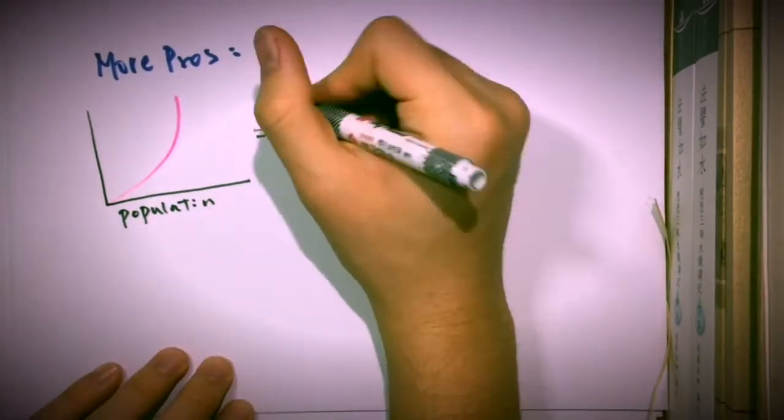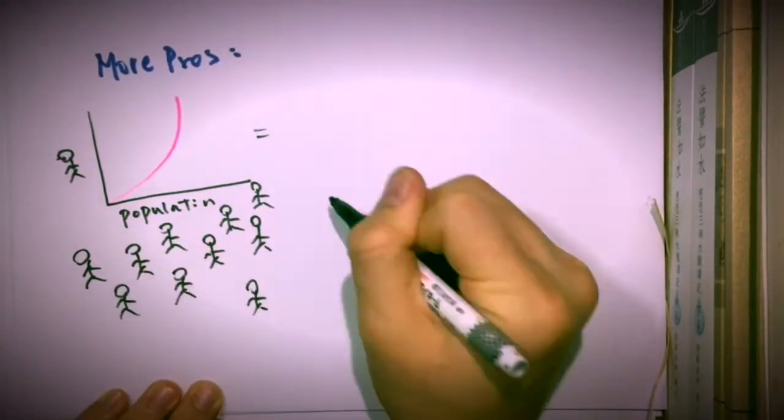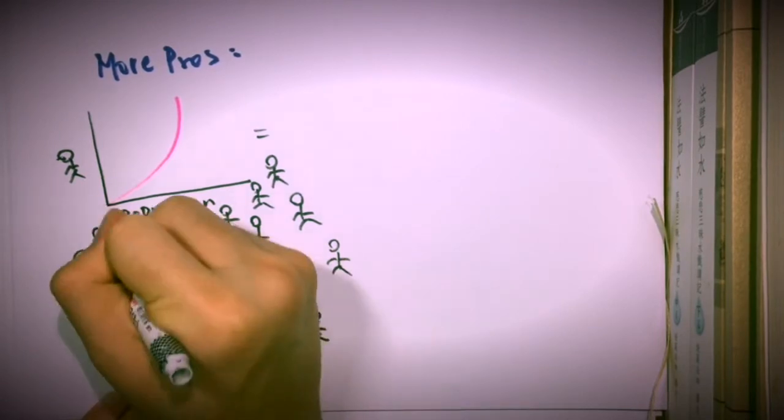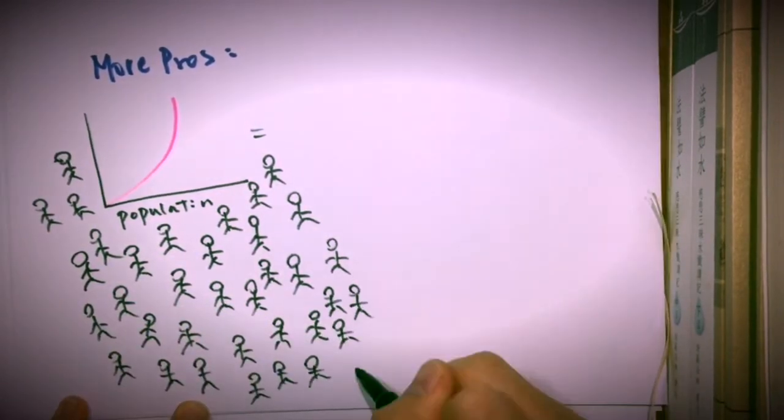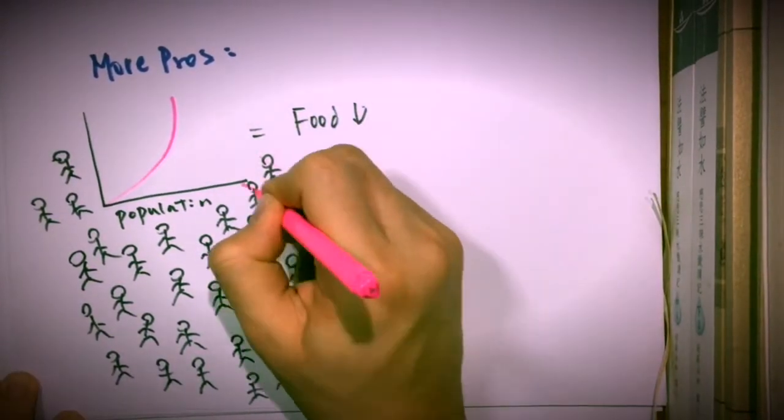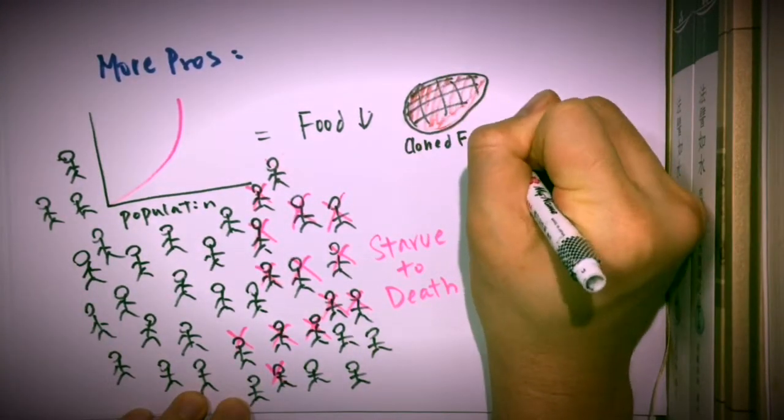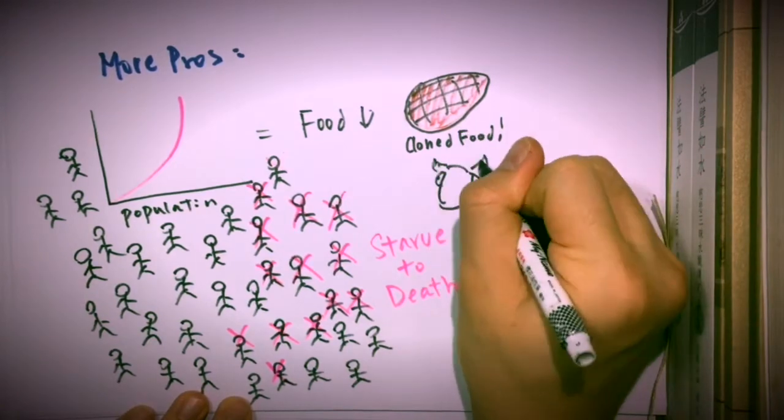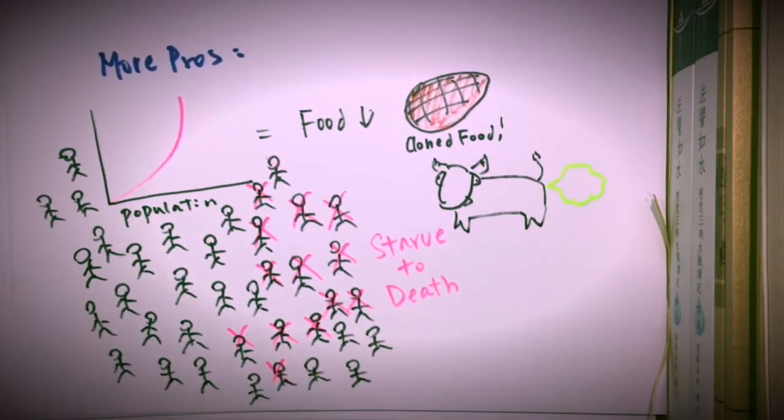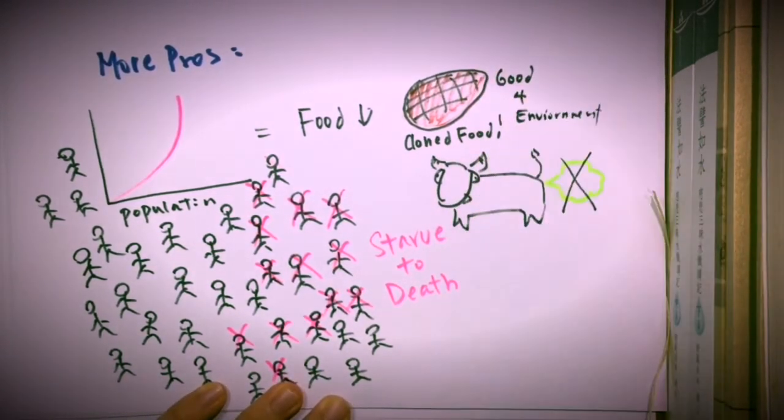Third of all, the human population keeps growing. At one point, we will not have enough food to feed everyone, resulting in some of us starving to death. With cloning, we will be able to clone food for people. Cloned food will not produce farts, which means it is also good for the environment.